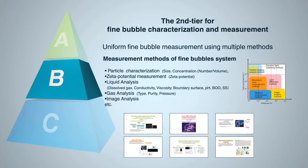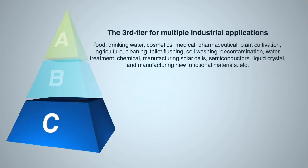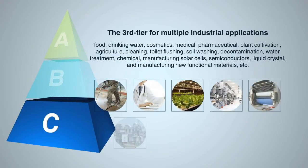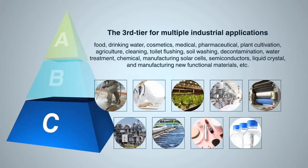However, in order to perform accurate measurement and analysis, appropriate storage, transport, and preparation is necessary, taking into consideration the characteristics of fine bubbles. Measurement Standards B will specify procedures for appropriate storage, transport, and preparation, so that anyone can correctly perform measurement anywhere, at any time. Specific Industrial Application Standard C will specify the fine bubble application technologies for the specific fields of industry in which they are likely to be used. Thus, it is necessary to clearly define the specific conditions and effects of each application in which fine bubble technology is used.